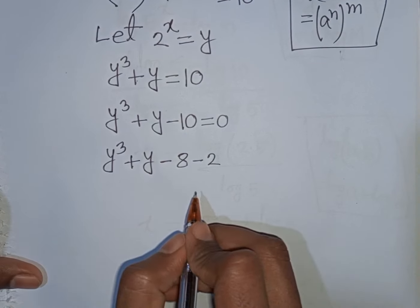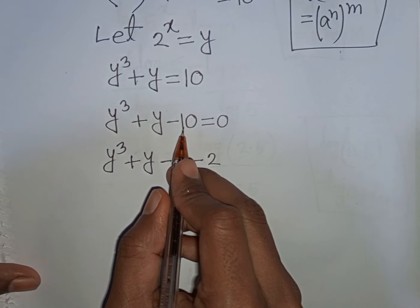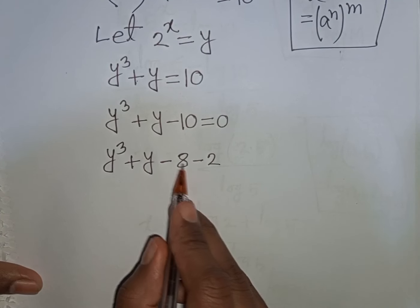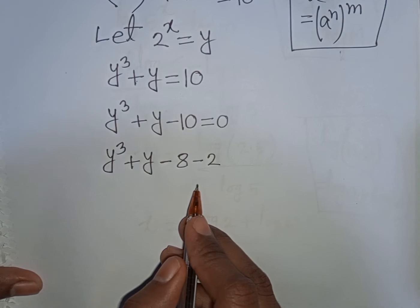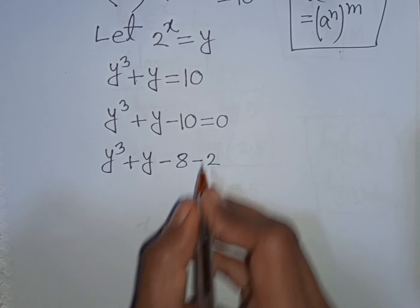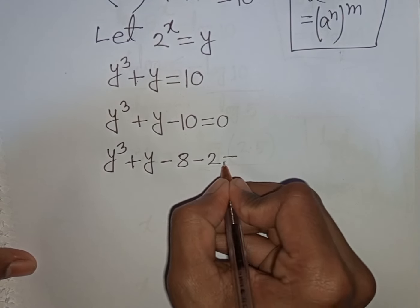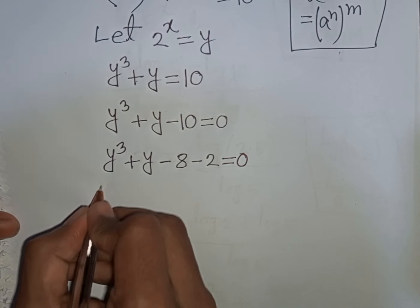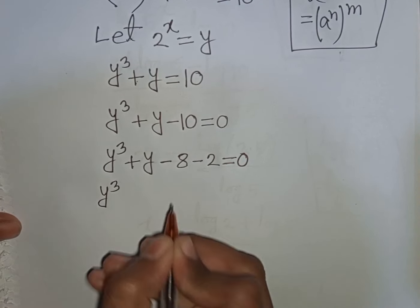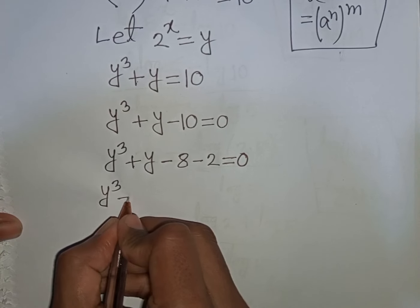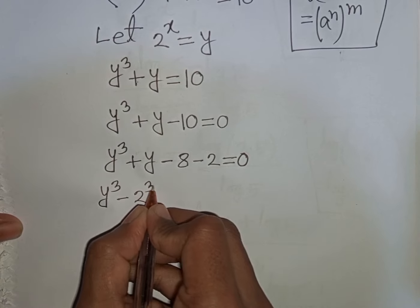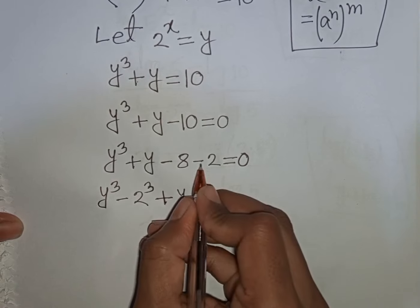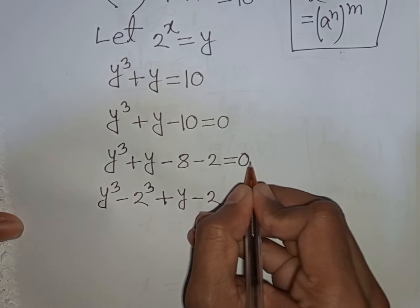How to understand this? Pay attention here — the nearest cubic number to 10 is 8. So minus 10 can be written as minus 8 minus 2. We have y cubed minus 8, which can be written as y cubed minus 2 cubed, then plus y minus 2 is equal to 0.